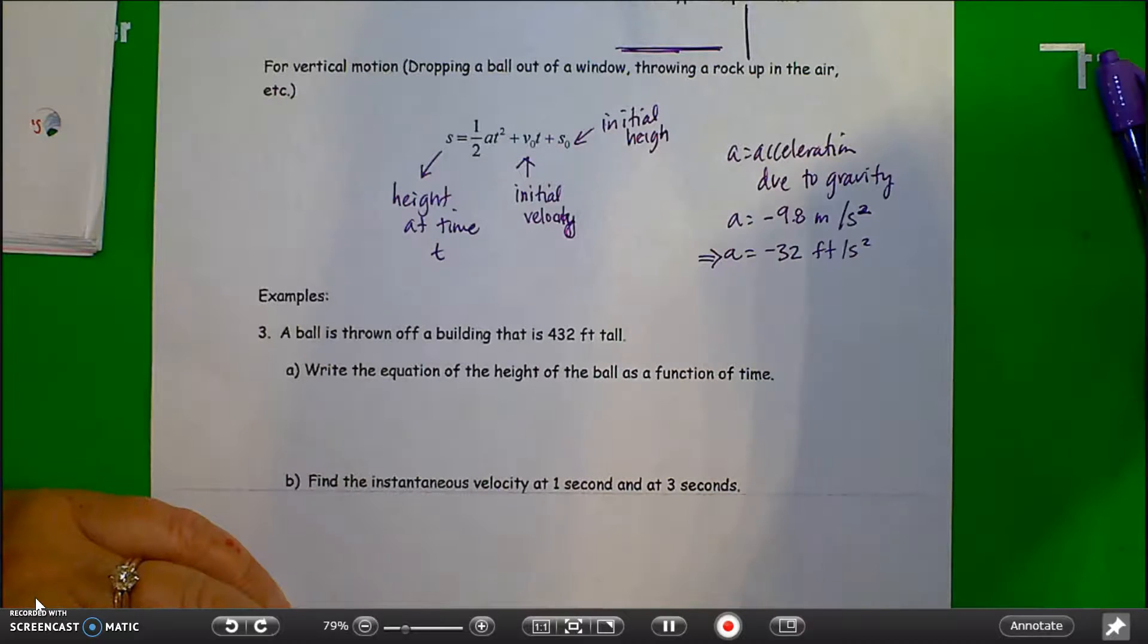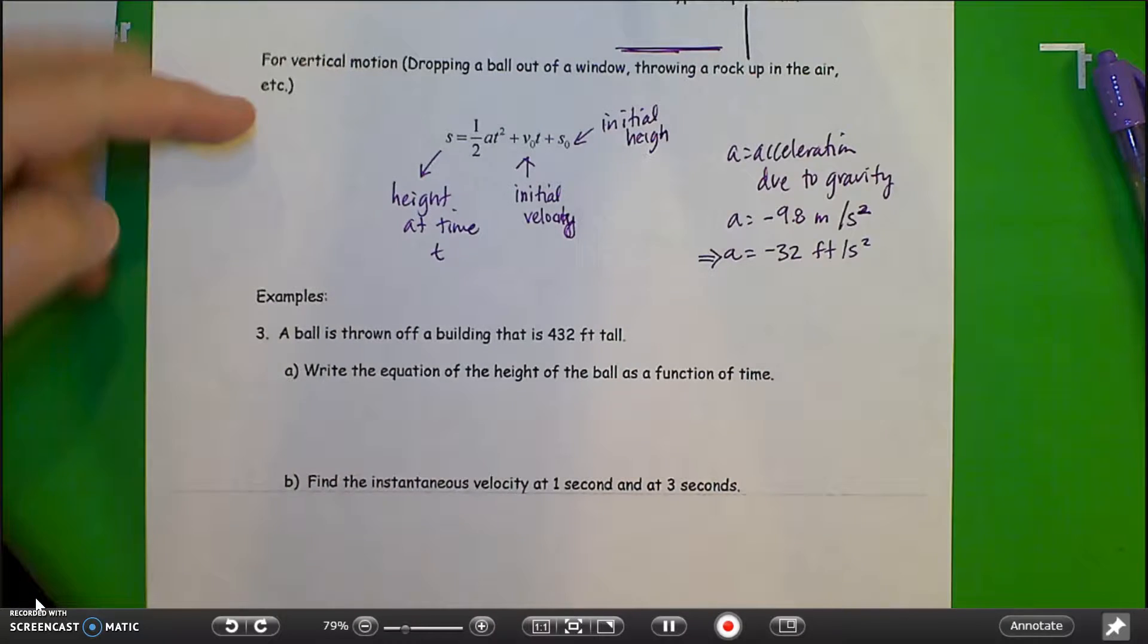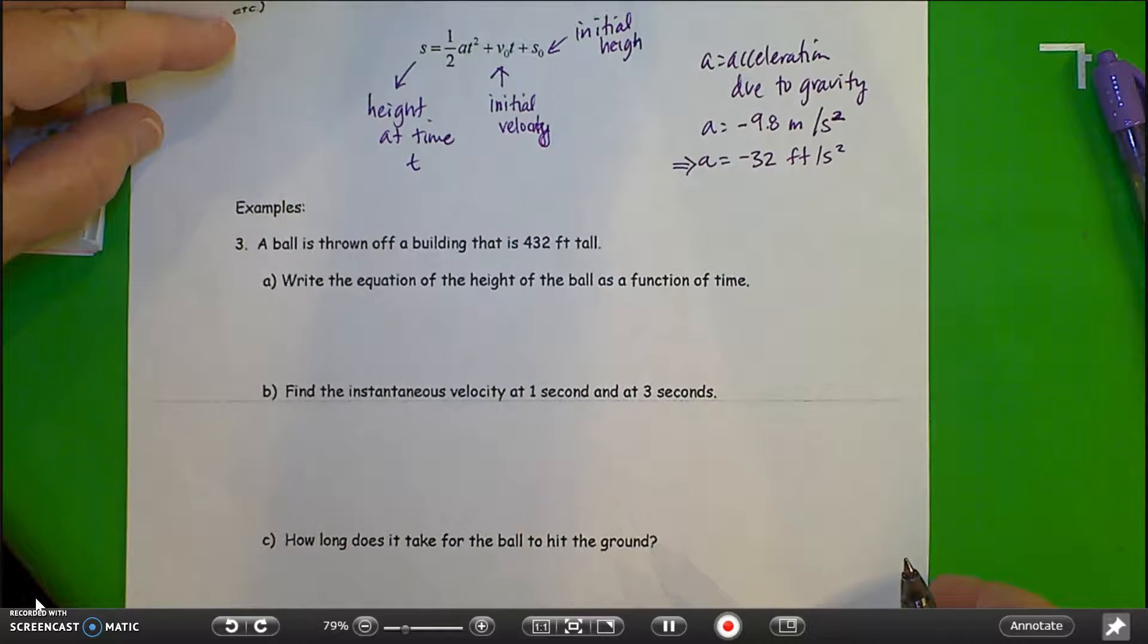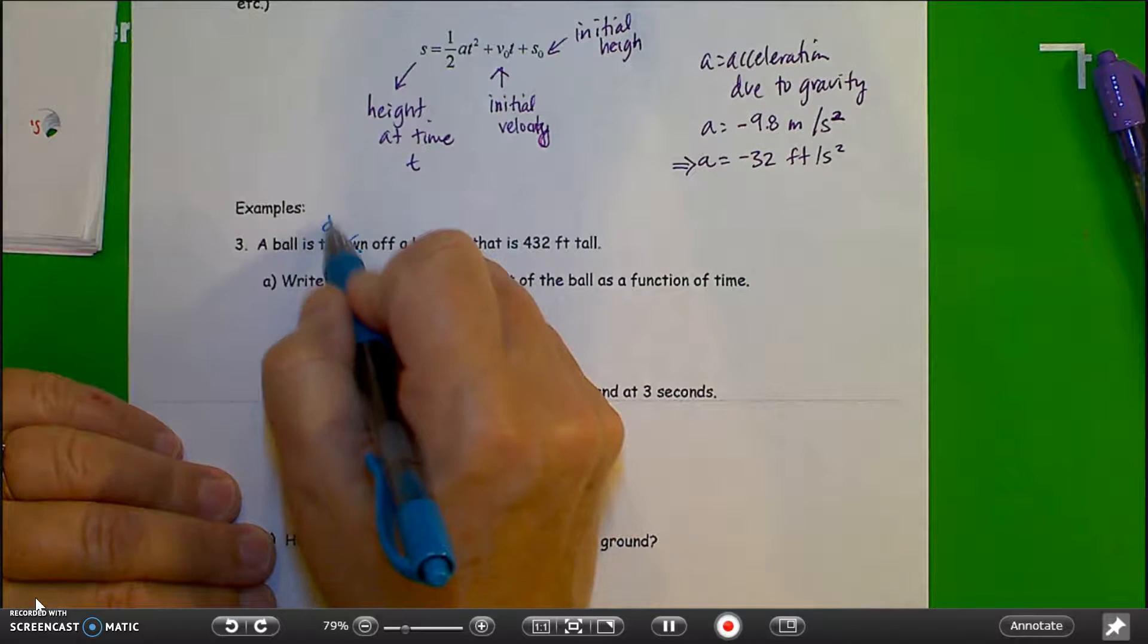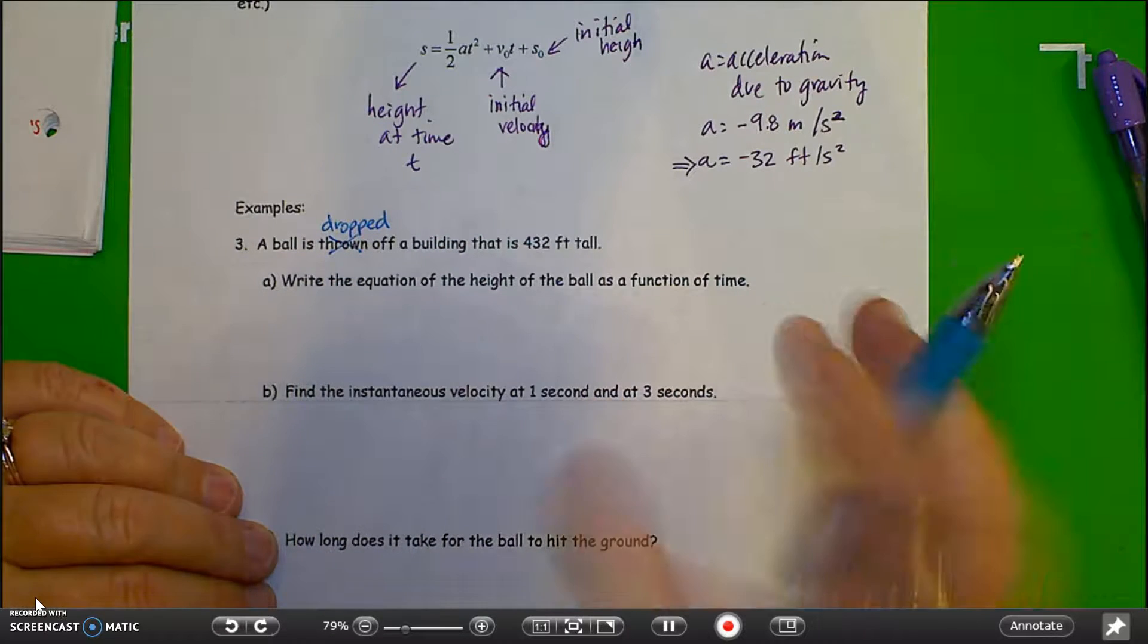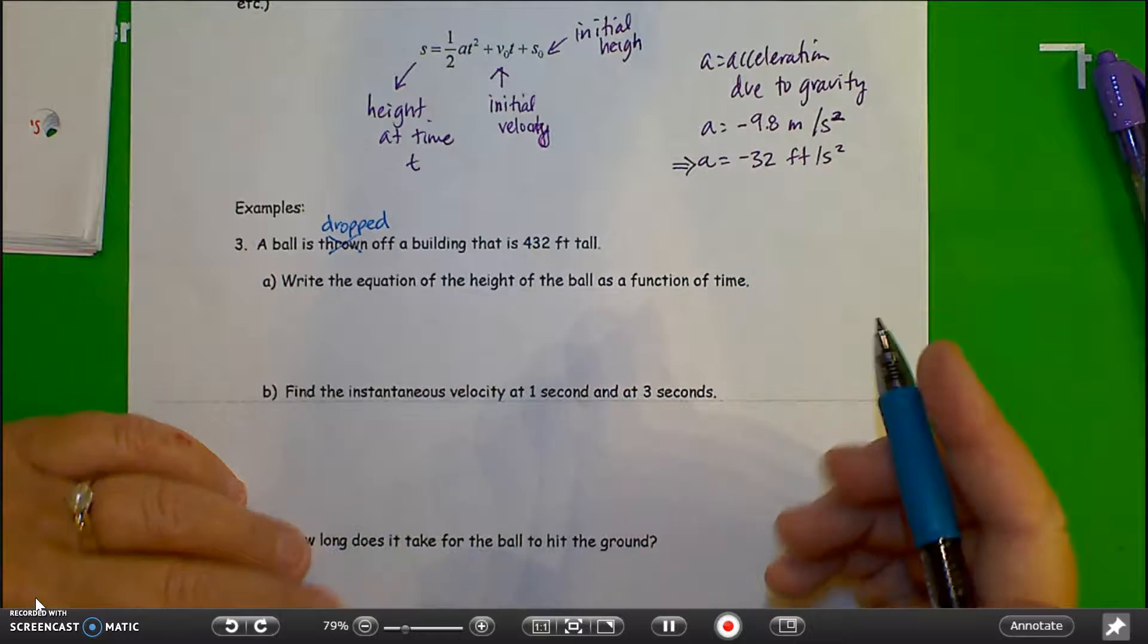So we'll take a look at the first problem. A ball is thrown off a building that's 432 feet tall. Write the equation of the height of the ball as a function of time. Instead of thrown off a building, let's just talk about this being dropped. It's dropped, just let go of the ball. It has no speed to it other than the immediate pull of gravity.